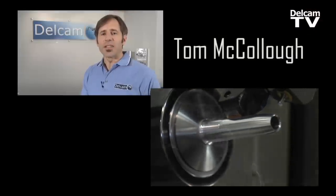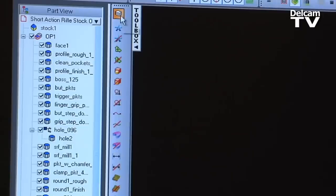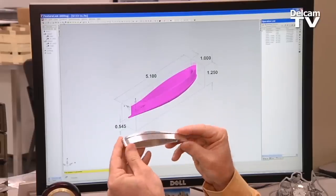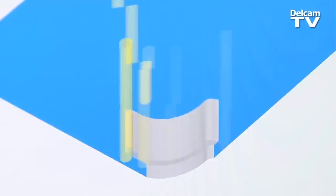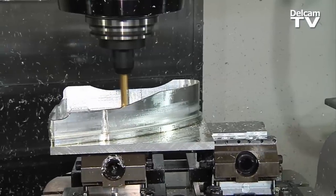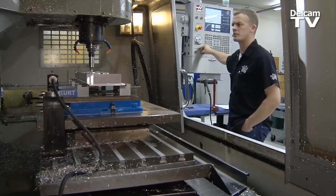The feature-based technology inside FeatureCam is unique. You're not going to find it in any other CAM software on the planet. It thinks about manufacturing in a whole different way. You get to think at a higher level. You don't have to interact with the software as much. That means you're going to have fewer errors. You're able to get the parts out to the machine faster and then off the machine to your customer faster.